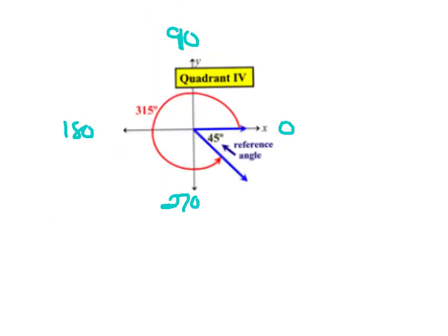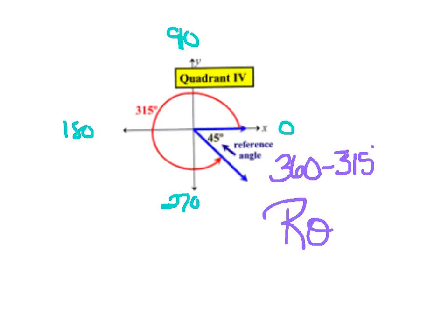My last quick sketch is in quadrant four. I graphed an angle of 315 degrees — positive 315, which puts me in quadrant four. 315 can't be my reference angle because it's not positive and acute. How far am I from the x-axis? I take my whole circle 360 and subtract my 315, and that gives me a reference angle of 45 degrees. So you're always saying: how far am I from the x-axis? Make a quick sketch and either subtract 180, add 180, or subtract from 360.